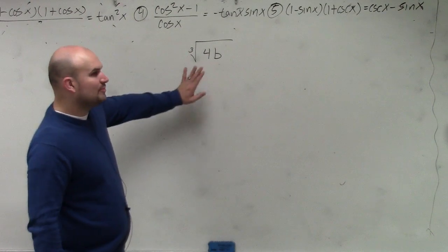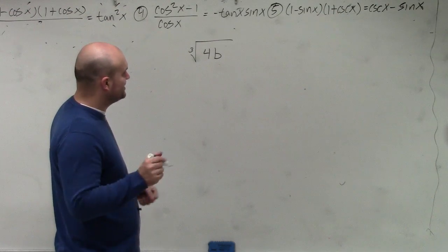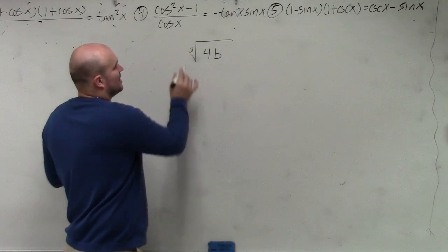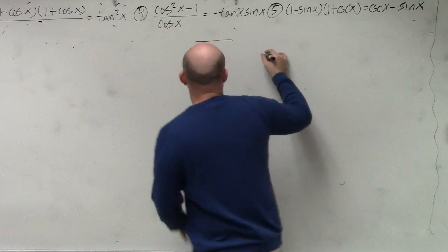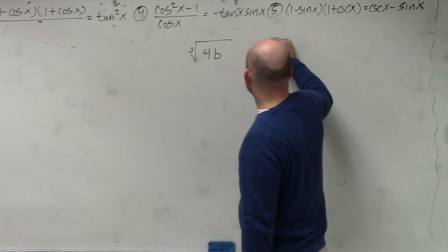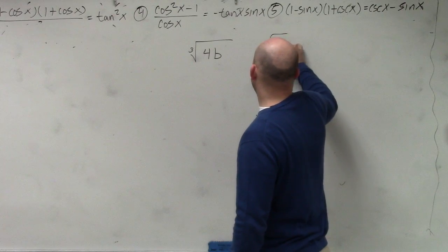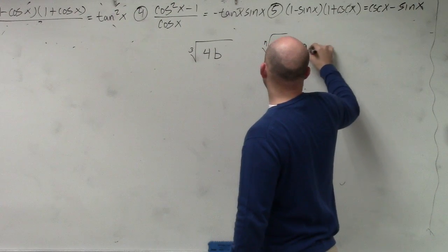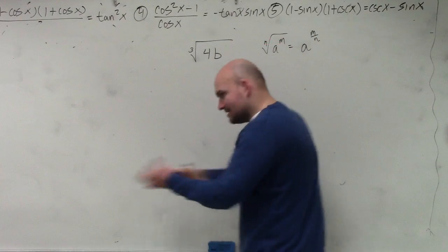So it's really important, ladies and gentlemen, when you're doing a problem like this, that you understand that here's the index. Well, first of all, if we know it's in this format, we could just easily rewrite the rules. n root of a to the m equals a to the m over n. Right? That's the rule.